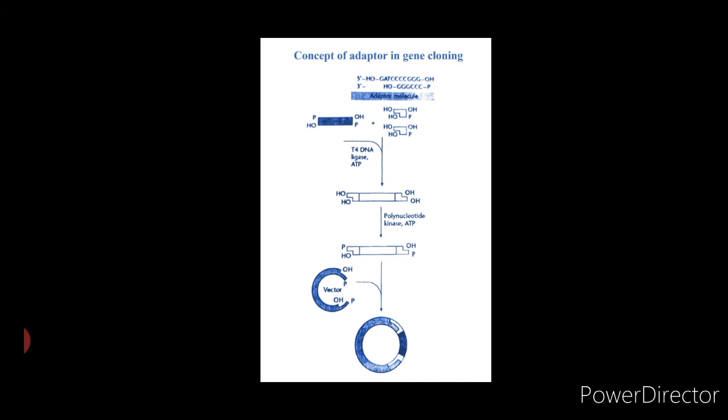This may appear to be a simple method, but in practice a new problem arises. The sticky ends of the individual adapter molecules could base pair with each other to form dimers. Thus, the new DNA molecule is still blunt ended.